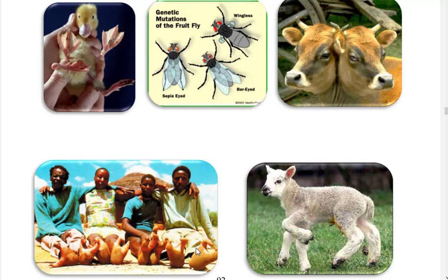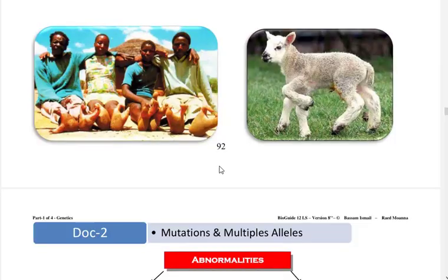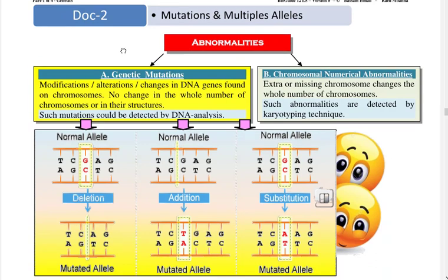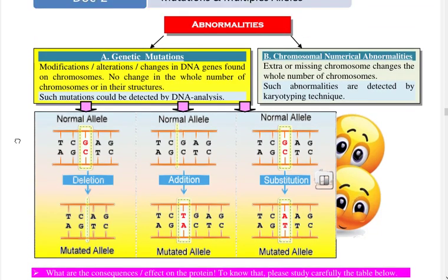All of these problems are types of mutations. Now let's see how mutations happen. Before going into detail, let me make a small introduction.